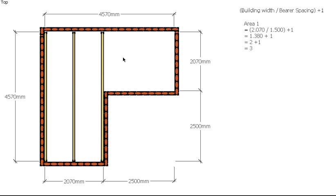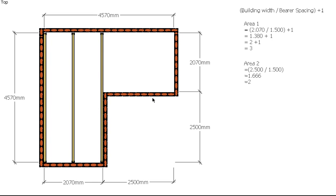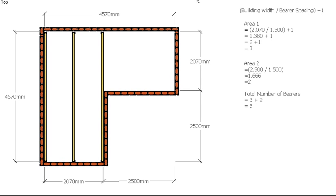Now I've got to work out area 2. Same formula, except now I've already got a bearer on this end, so in this case I won't need to add the 1 to it. I can just do the width of the second area, which is 2.5m, and divide it by my bearer spacing of 1.5m. That gives us 1.6, and we can't have 0.6 of a bearer, so we round that up to 2 bearers.